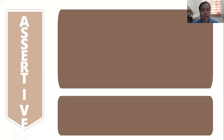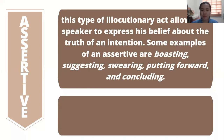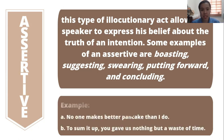Let's have the first one: Assertive. This type of illocutionary act allows the speaker to express his belief about the truth of an intention. It is an utterance intended to tell you how things are in the world or a representation of reality. An assertive is a statement, description, classification, explanation, and clarification. Some examples of an assertive are boasting, suggesting, swearing, putting forward, and concluding. Example sentences are: 'No one makes better pancakes than I do,' and 'To sum it up, you gave us nothing but a waste of time.' You also have to take note that when you assert something, you need to have confidence and consider the quality or tone of your voice.